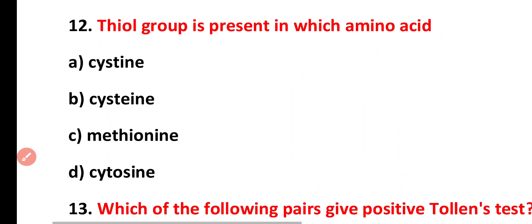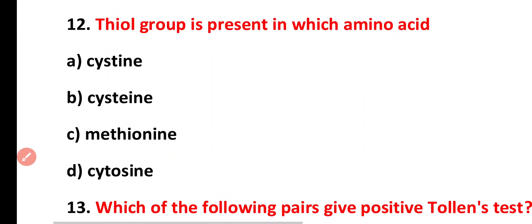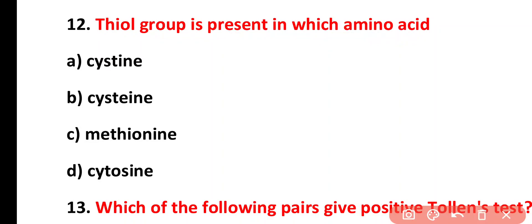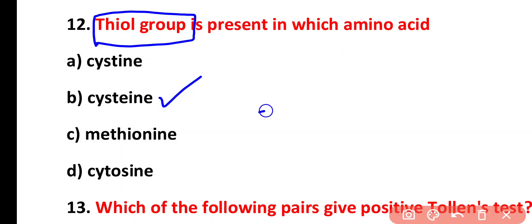Question twelve: thiol group is present in which amino acid? Options: cystine, cysteine, methionine, cytosine. The correct answer is option B. Cysteine amino acid has a thiol group with the formula S-H.